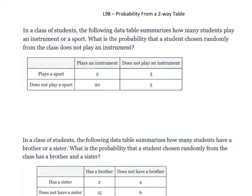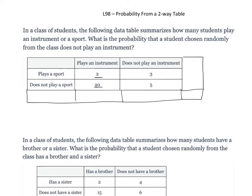So here we have two things: plays an instrument, does not play an instrument; plays a sport, does not play a sport. We can see that information organized. Plays an instrument AND plays a sport — there are two people that do both. Plays an instrument but does not play a sport is 20, and so on. The first thing we want to do, if totals aren't already provided in the table, is find totals of the information, so we can see the total number of people surveyed.